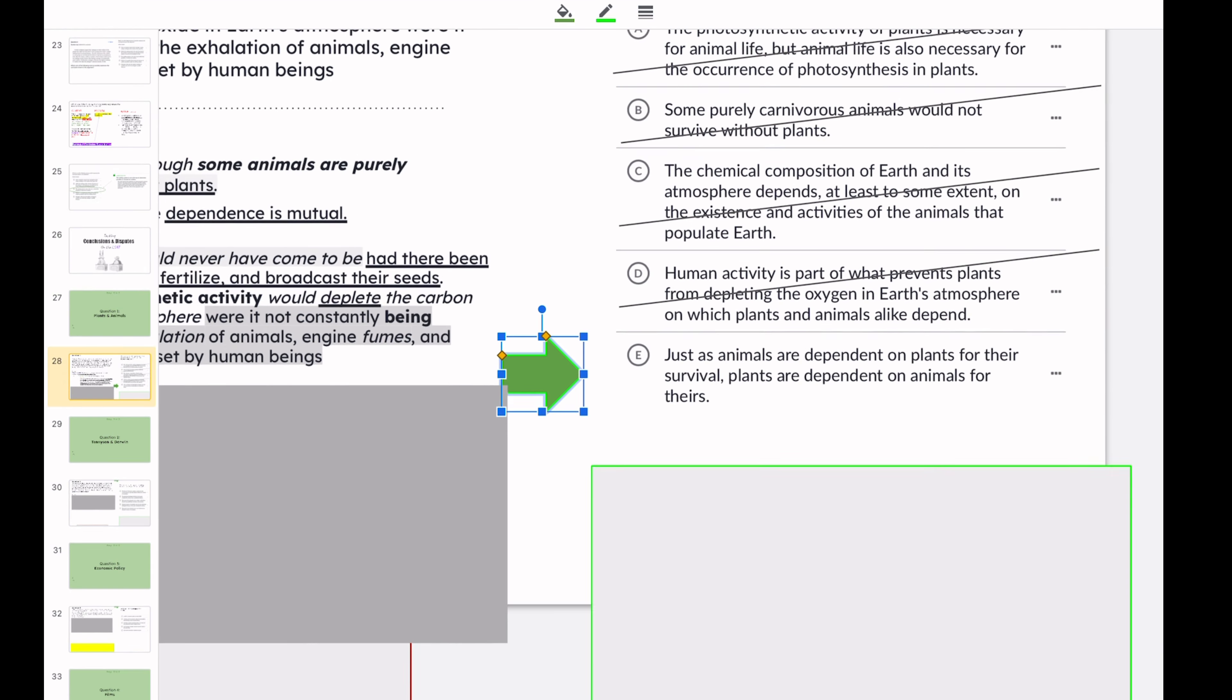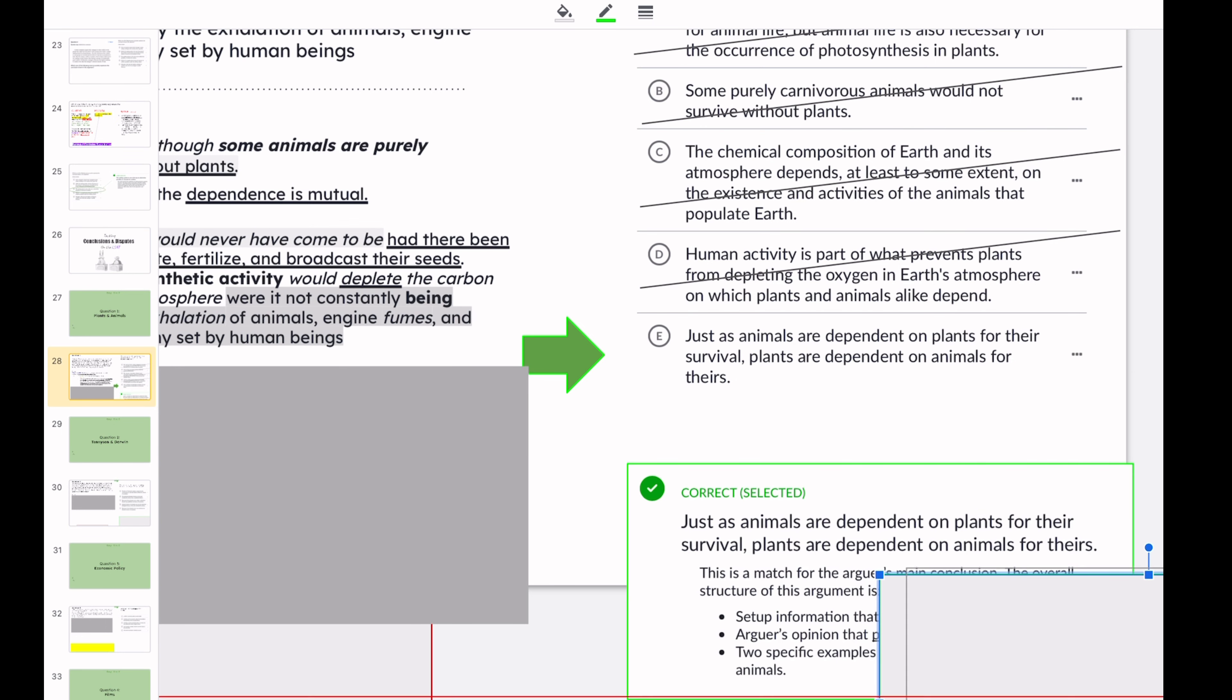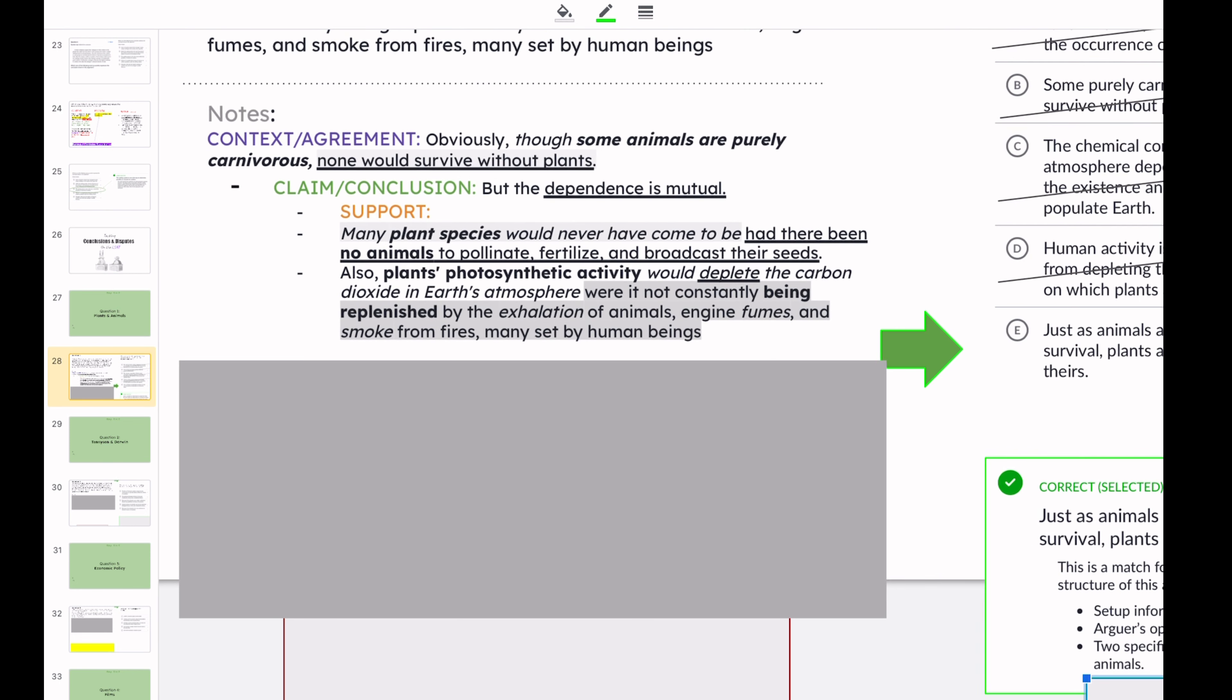All right, and here's the answer. Just as animals are dependent on plants for their survival, plants are dependent on animals for theirs. This is a match for the arguer's main conclusion. The overall structure of the argument is set up information that animals need plants to survive. Arguer's opinion that plants in turn need animals to survive. We have two specific examples illustrating how plants have needed animals, just like we did in our notes right over here.